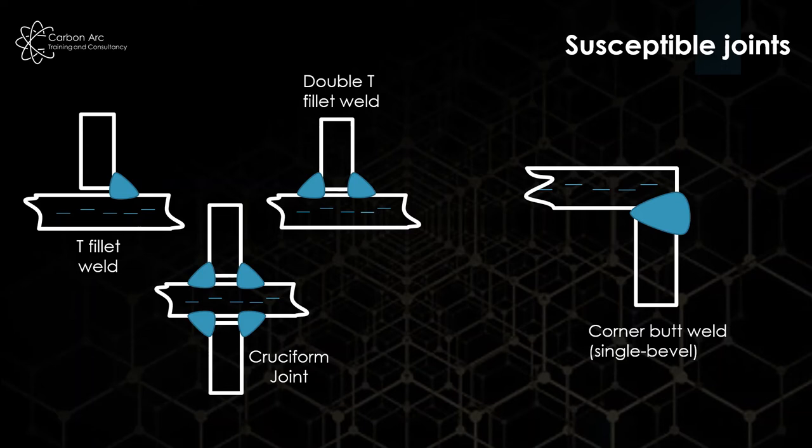We also have corner welds as well. So again, you can see by the sketch here on the right, when the weld starts to cool, it will pull the through thickness of that top plate away.